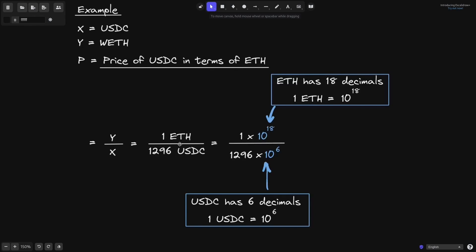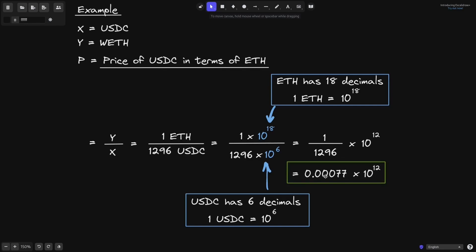Since ETH has 18 decimals and USDC has 6 decimals, 1 ETH is equal to 10 to the 18, and 1,296 USDC is equal to 1,296 times 10 to the 6. We can cancel out the powers of 10 and we are left with 1 divided by 1,296 times 10 to the 12. Using a calculator, this is roughly equal to 0.00077 times 10 to the 12.